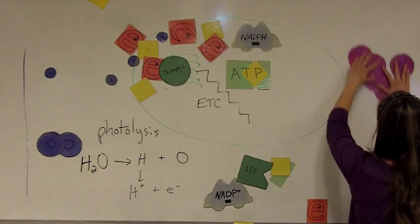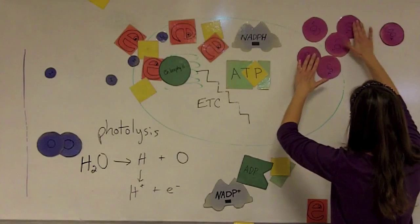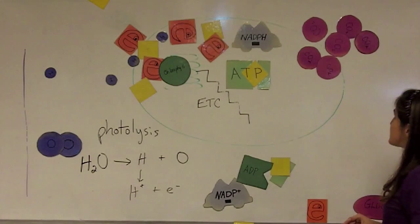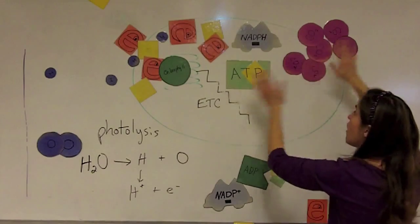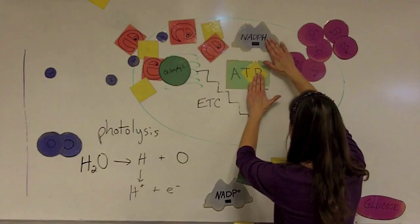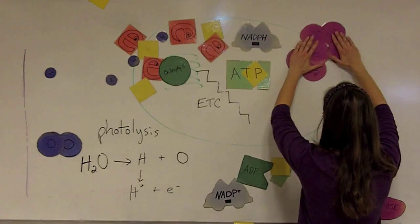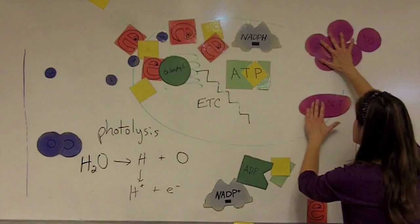And the stroma has been diffusing molecules of carbon dioxide in through the stomata of the leaf, into the cells, into the chloroplasts. And in the Calvin cycle, a bunch of chemical reactions are going to use energy from these two carriers to combine the carbon from carbon dioxide and convert it into glucose.